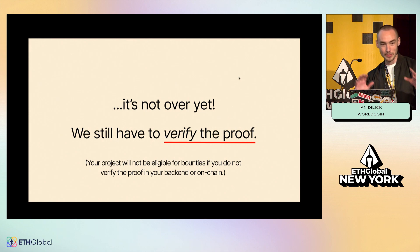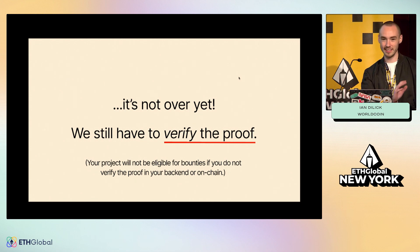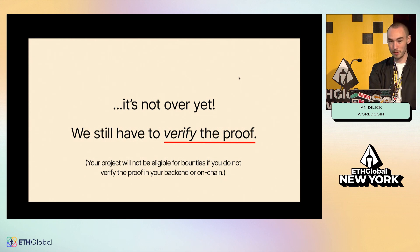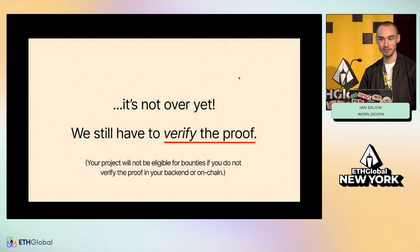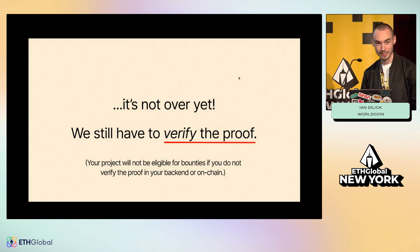We have to verify the proof. Just receiving that back from the widget doesn't mean anything — any information that's just in the front end your user can manipulate. If you don't verify that proof either with our API or on chain, you don't actually know if the user is a unique human or not. Your project is not eligible for bounties from WorldCoin if you don't verify that proof. Verifying the proof is important — I cannot reiterate that enough.